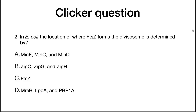Now for a concept check. In E. coli, the location of where FTSZ forms the divisome is determined by... The correct answer is MinE, MinC, and MinD.